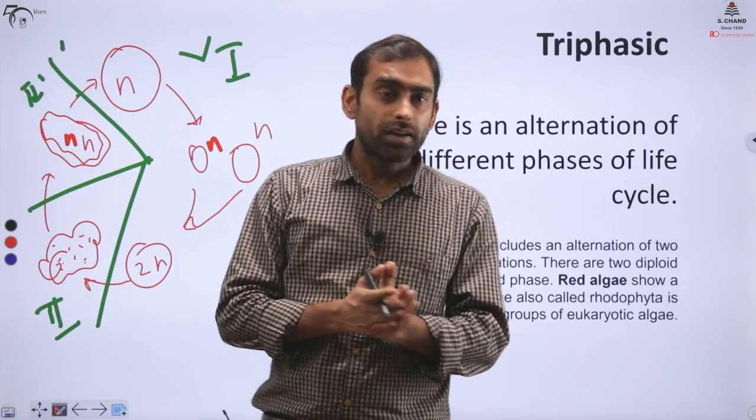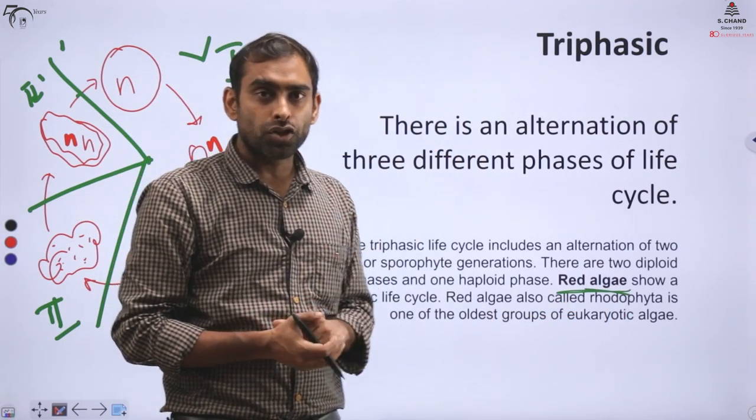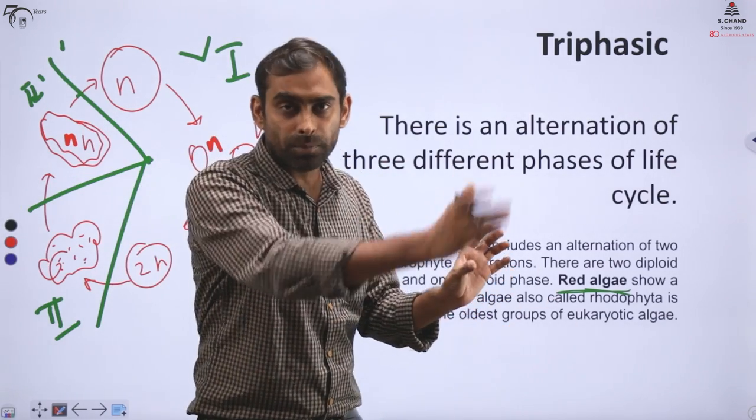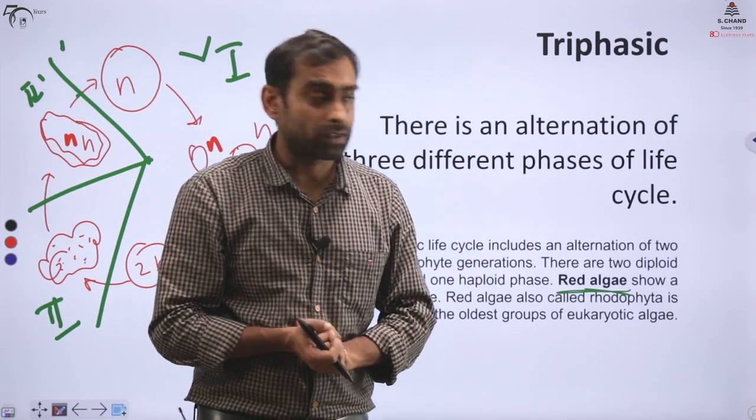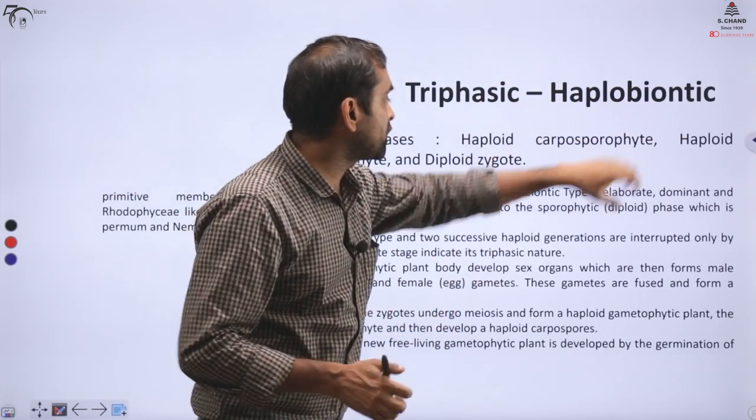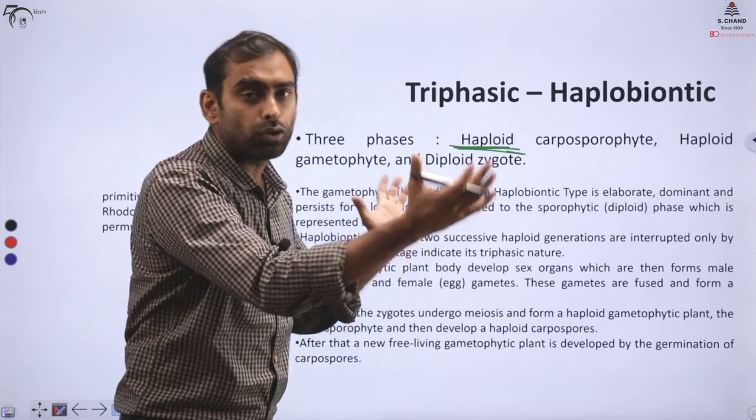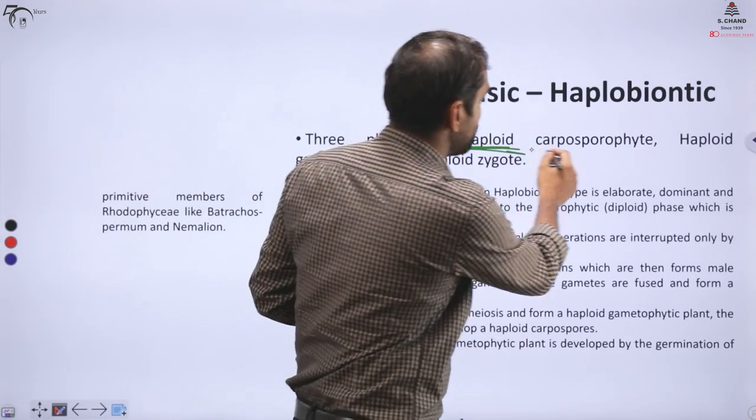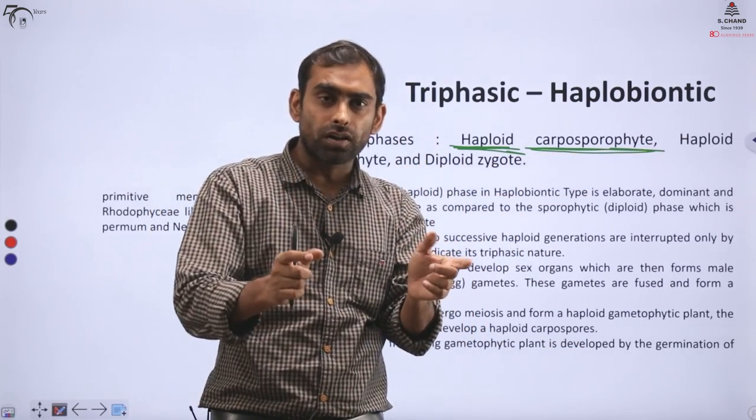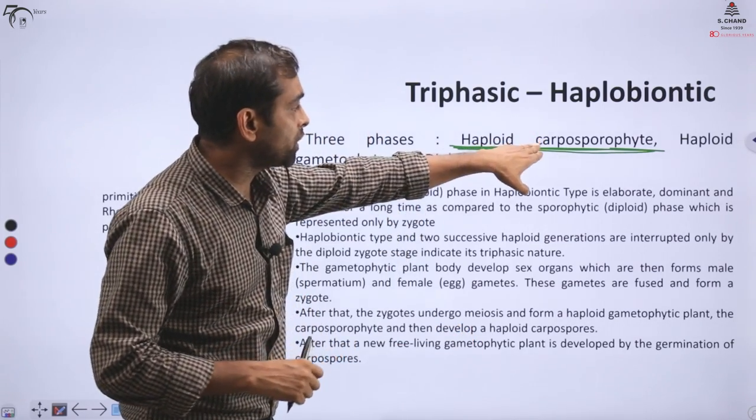This life form is different, this life form is different, and this life form is different. So if they have three types of life forms - type 1, type 2, and type 3 - then this will be called a triphasic life form. In triphasic life form, there are many different examples from red algae that show this type of life cycle. In this, either haploid or diploid - either there can be two types within haploid, or two types within diploid. On that basis, they're further divided.